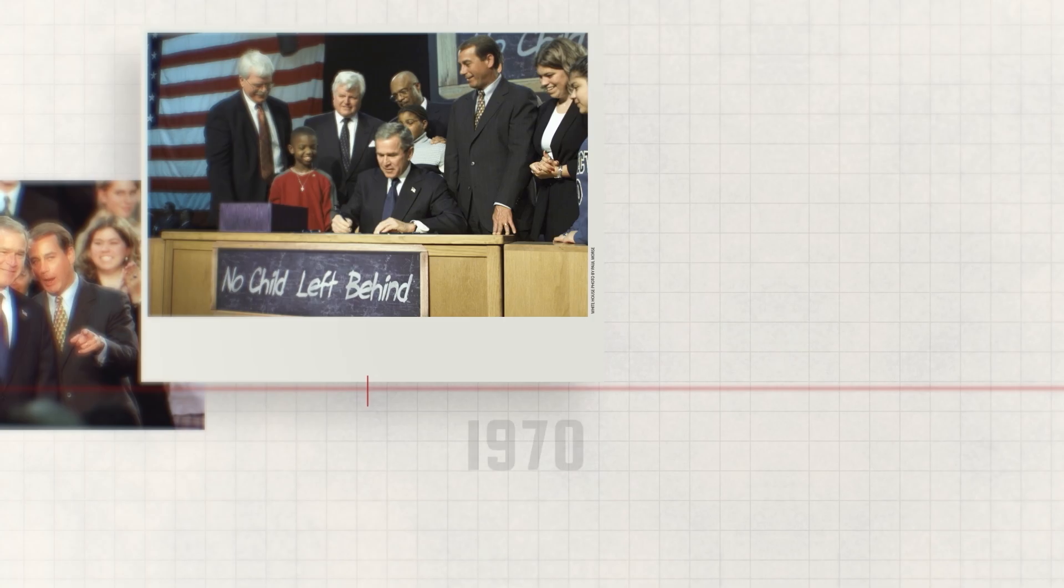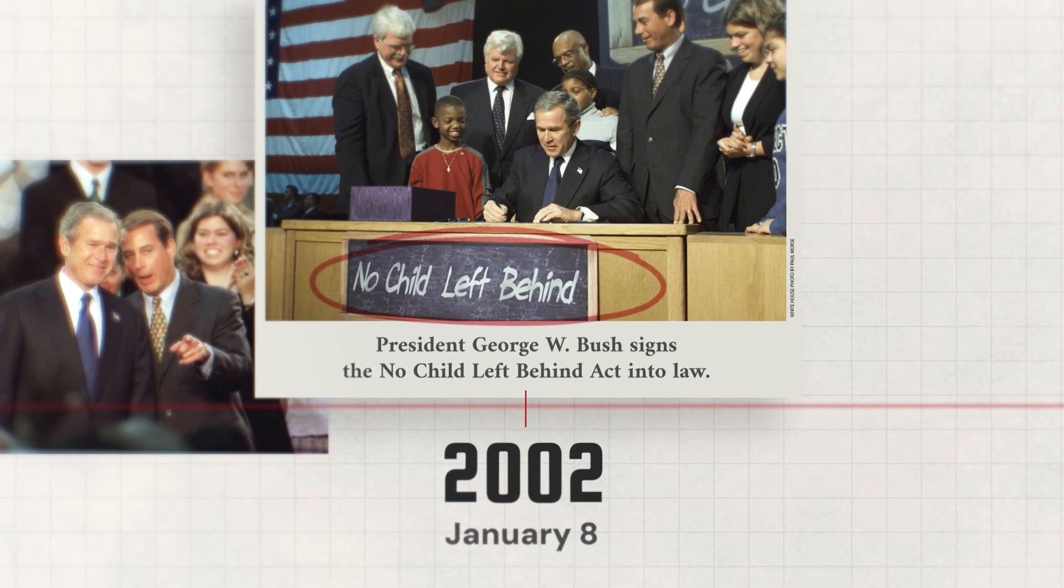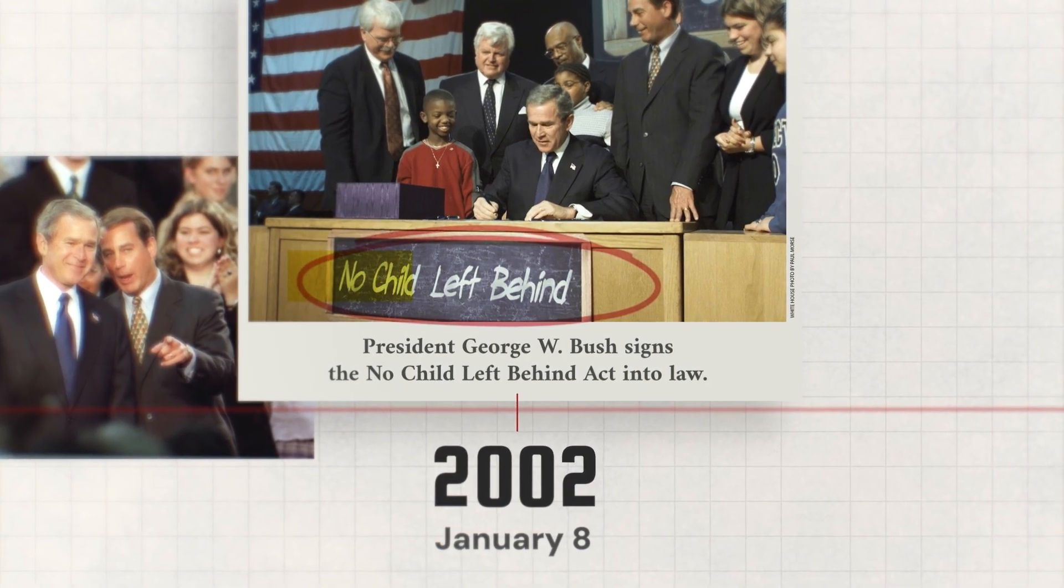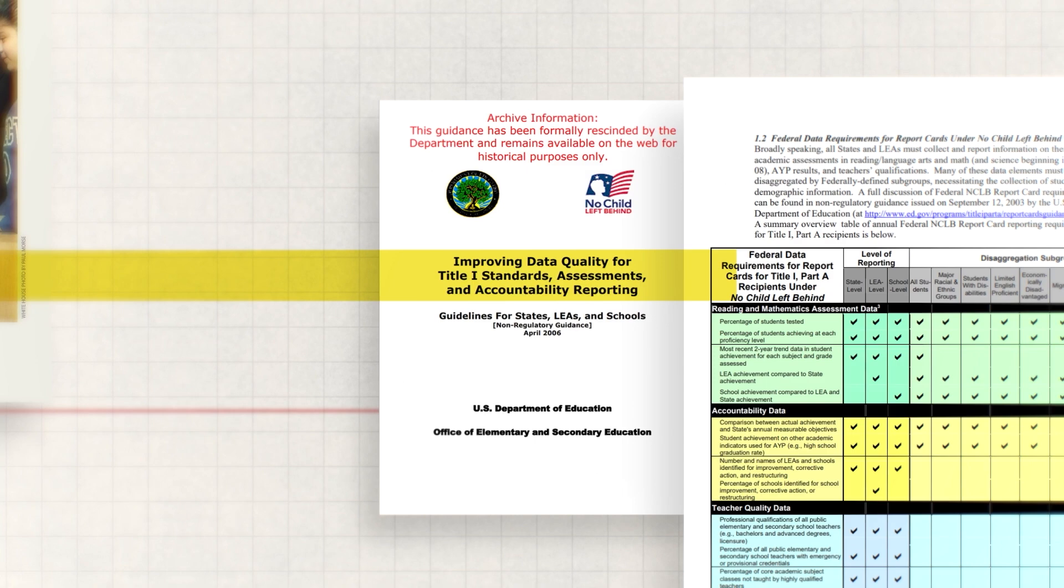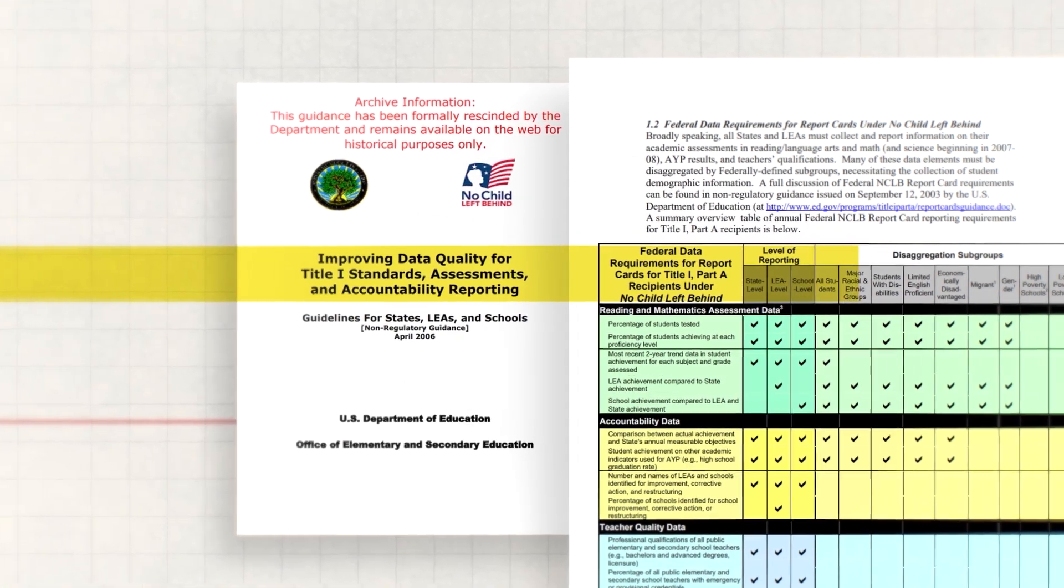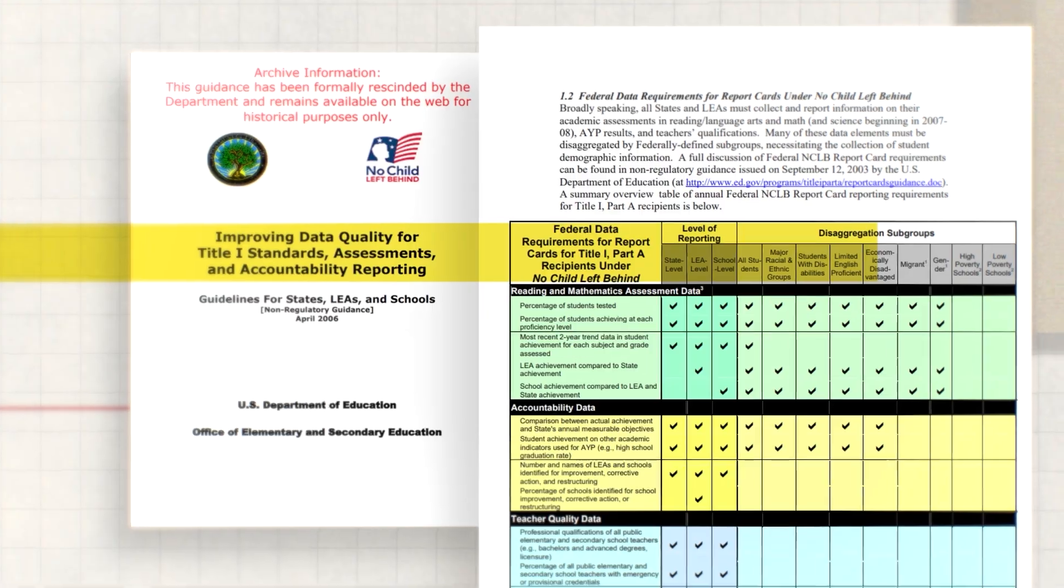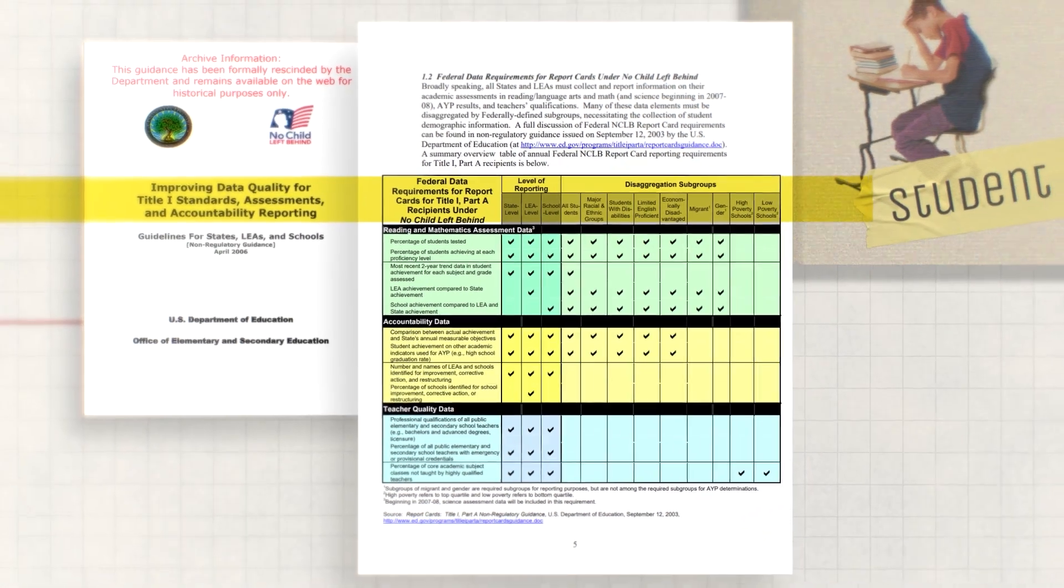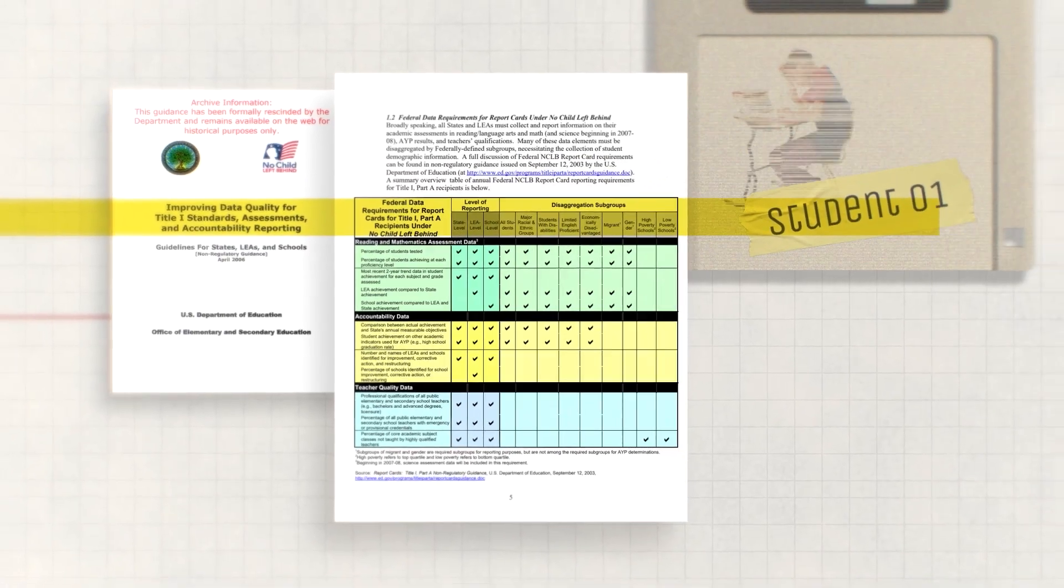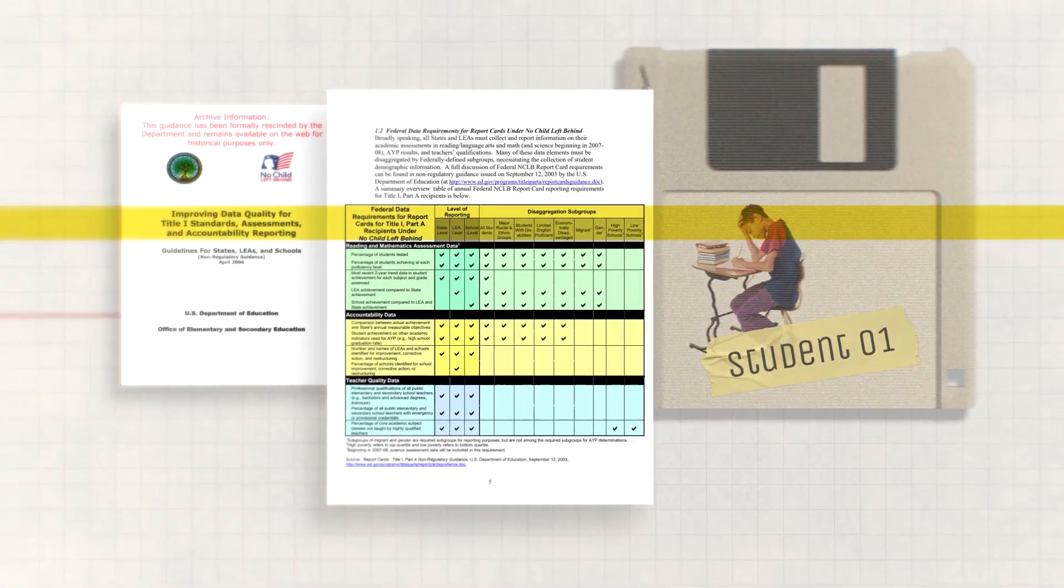But then 2002 changed everything. Because President Bush signs No Child Left Behind. And suddenly, every school in America must test students annually and publicly report scores by demographic subgroup. So overnight, schools become obsessed with data. Because now, every school, in every district, in every state, needs analytics tools, personalized interventions, and measurable outcomes. So the entire education system transforms into a data-driven machine.